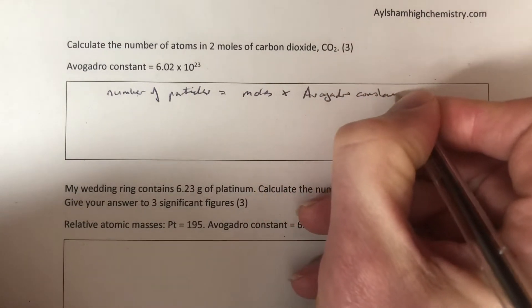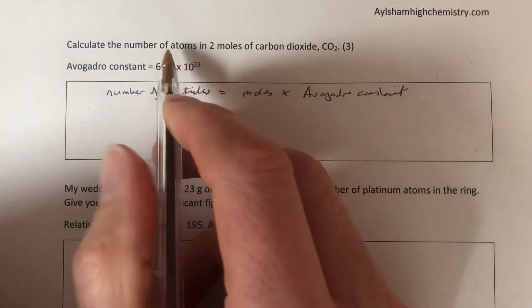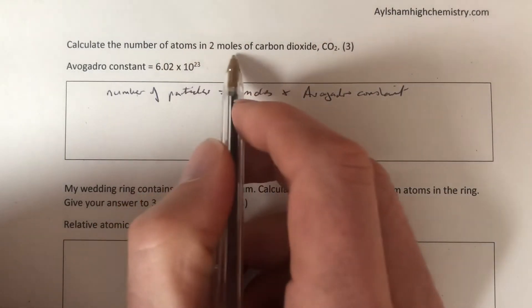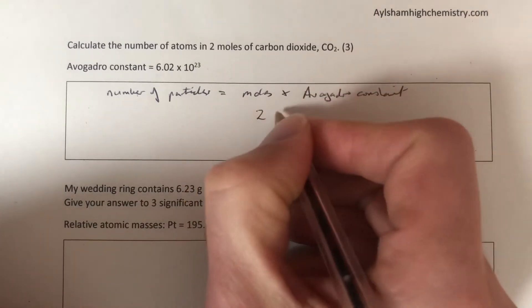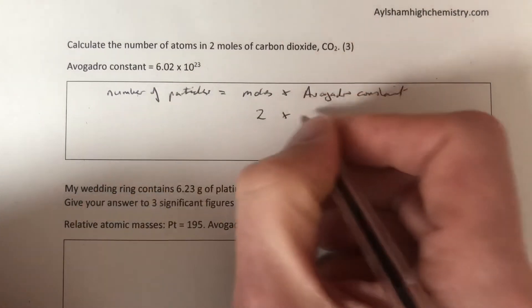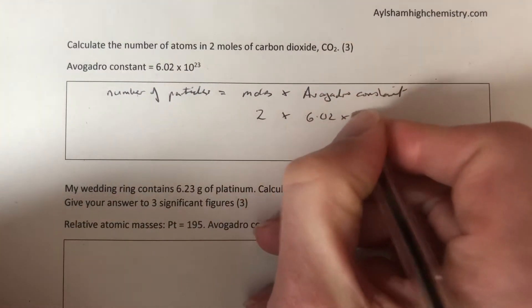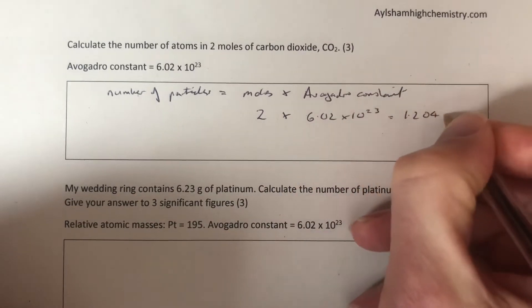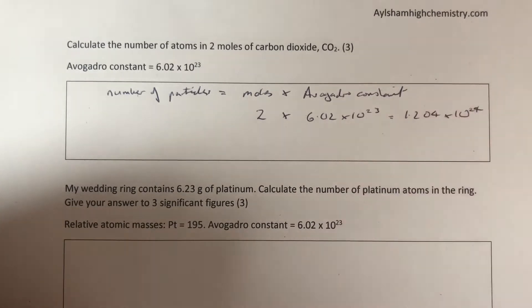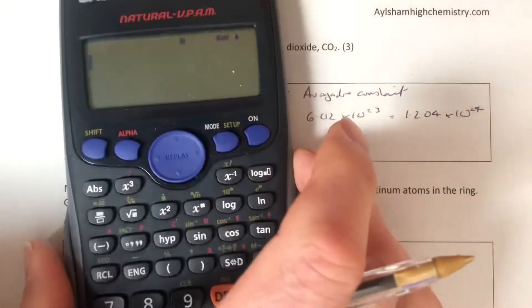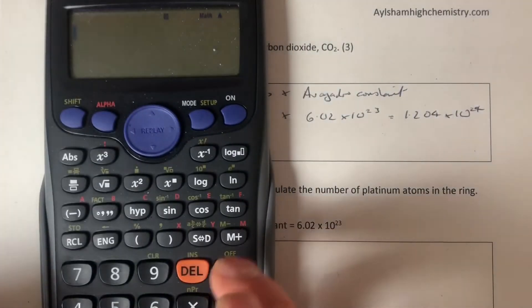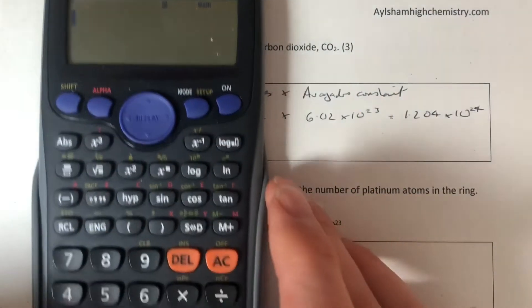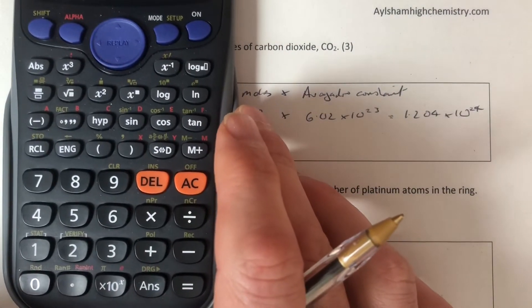We want to know how many particles we've got. There's a bit of a sting in this question, we'll come to that in a moment. We've got two moles, so two moles times the Avogadro constant, 6.02 times 10 to the 23, and that's going to be 1.204 times 10 to the 24, just in my head.